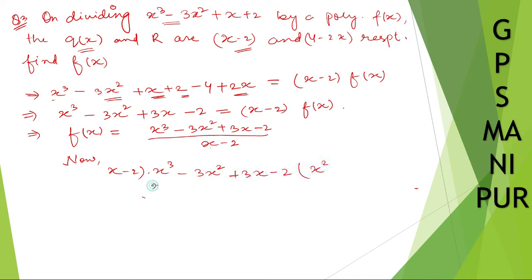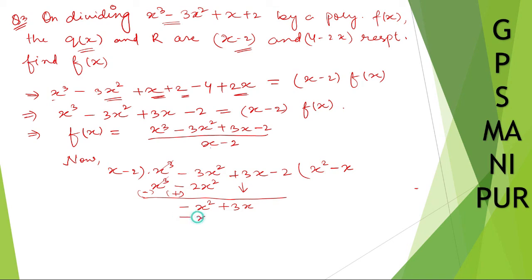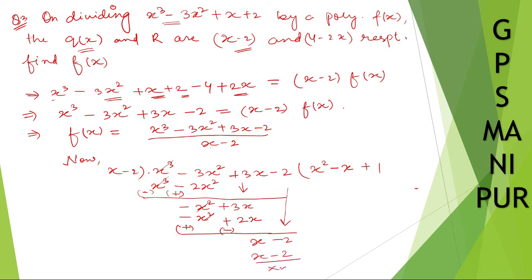x into x squared gives x cubed; minus 2 into x squared gives minus 2x squared. Changing signs: x cubed cancels, leaving minus x squared plus 3x. Then x minus 2 into minus x: x into minus x gives minus x squared; minus 2 into minus x gives plus 2x. Changing signs, 3x minus 2x gives x, and bringing down minus 2. Then (x minus 2) into plus 1 gives x minus 2, which cancels.